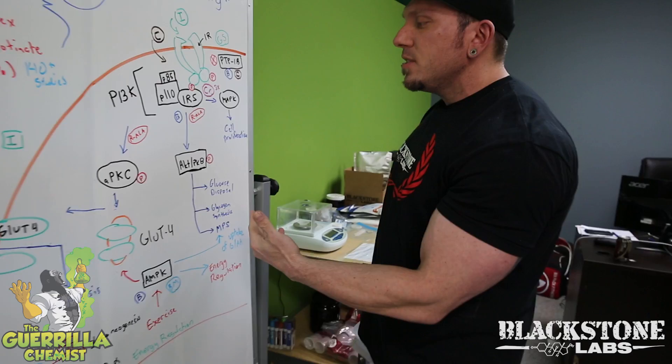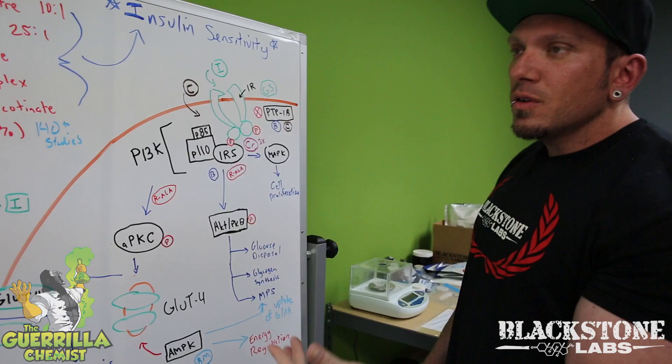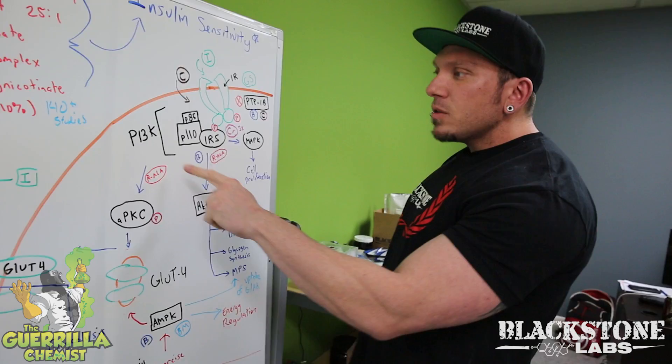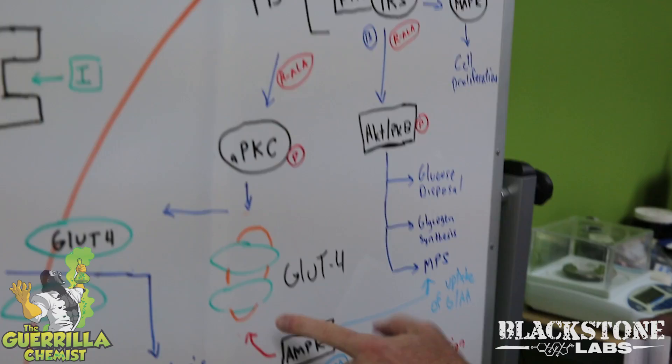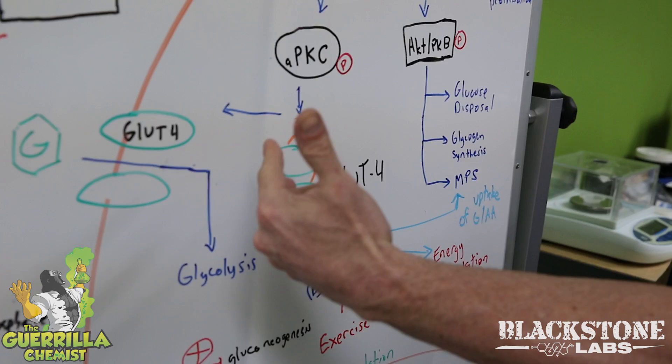R-ALA is basically making your insulin work better — it's almost like using more insulin but using it way more effectively. It also goes down the PI3K pathway and facilitates GLUT4 translocation, so you'll be able to bring more glucose inside your cells when using R-ALA versus using your body's insulin alone.